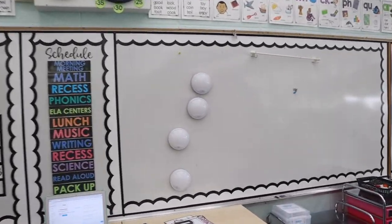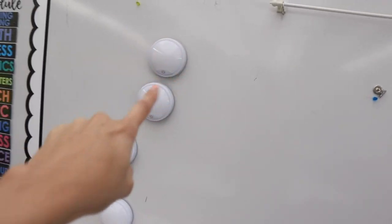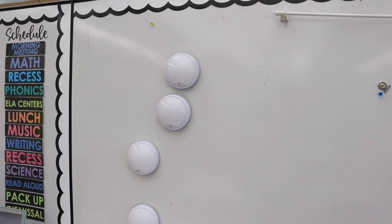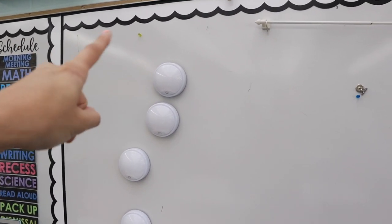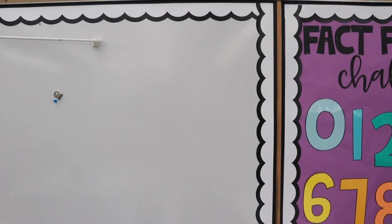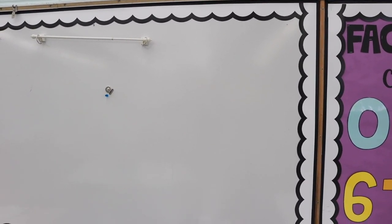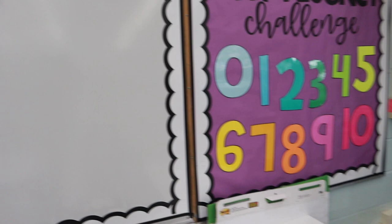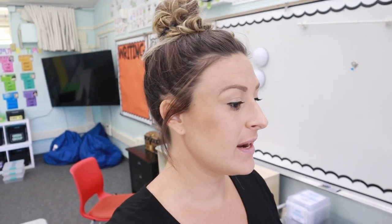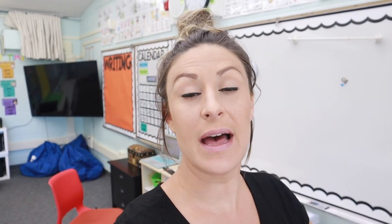I'm also going to finish the front of this board. I have my voice levels — I'm going to cut those out. I've actually showed you how I cut out the voice levels in a previous vlog, but I will show you how I cut out the header. It's going to say 'voice levels,' and I also need to cut out 'Mrs. Coates' and 'second graders.' I'm going to use my Cricut to cut out those headers, and then I want to get these headings cut so I can just stick them up.